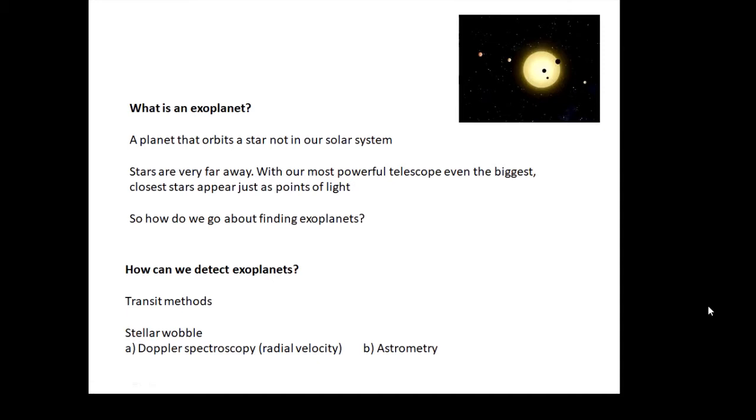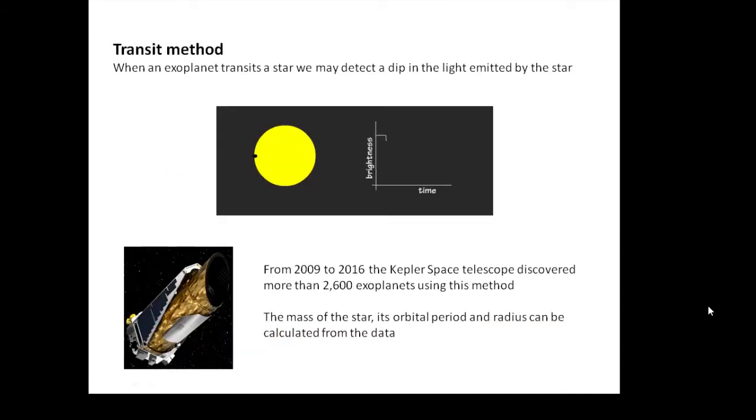The transit method is basically: there's the star, there's a planet in orbit around the star, and as the planet goes across the face of the star, the amount of light that we see—there is a dip in the light curve.